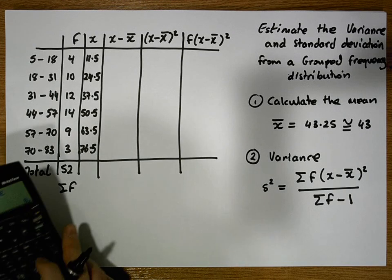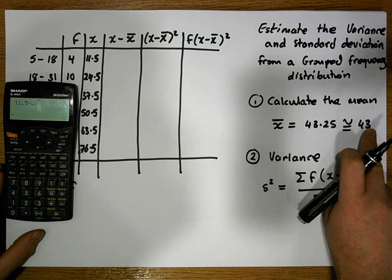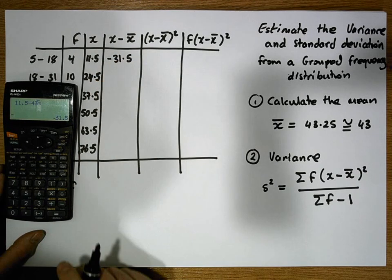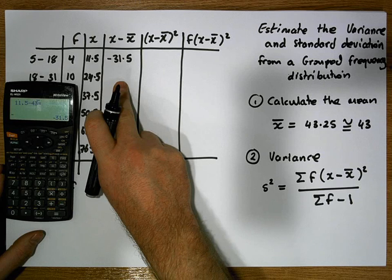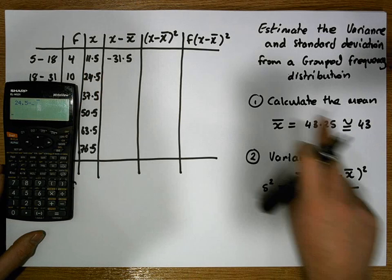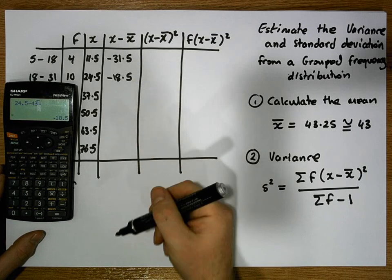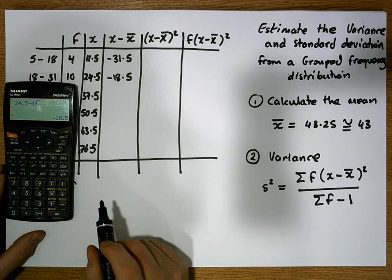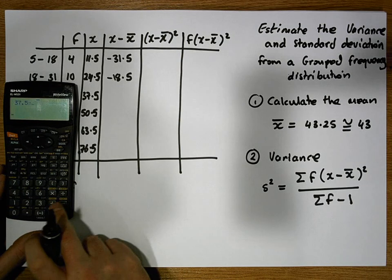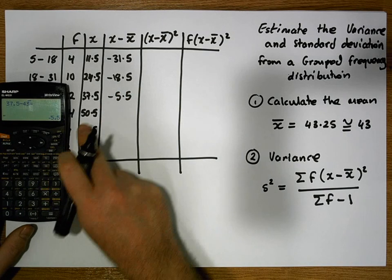The first x minus x̄ value is 11.5 minus 43, which gives us minus 31.5. The next is 24.5 minus 43, which gives us minus 18.5. At this stage we just keep adding the class width of 13. The next is 37.5 minus 43, which gives us minus 5.5.